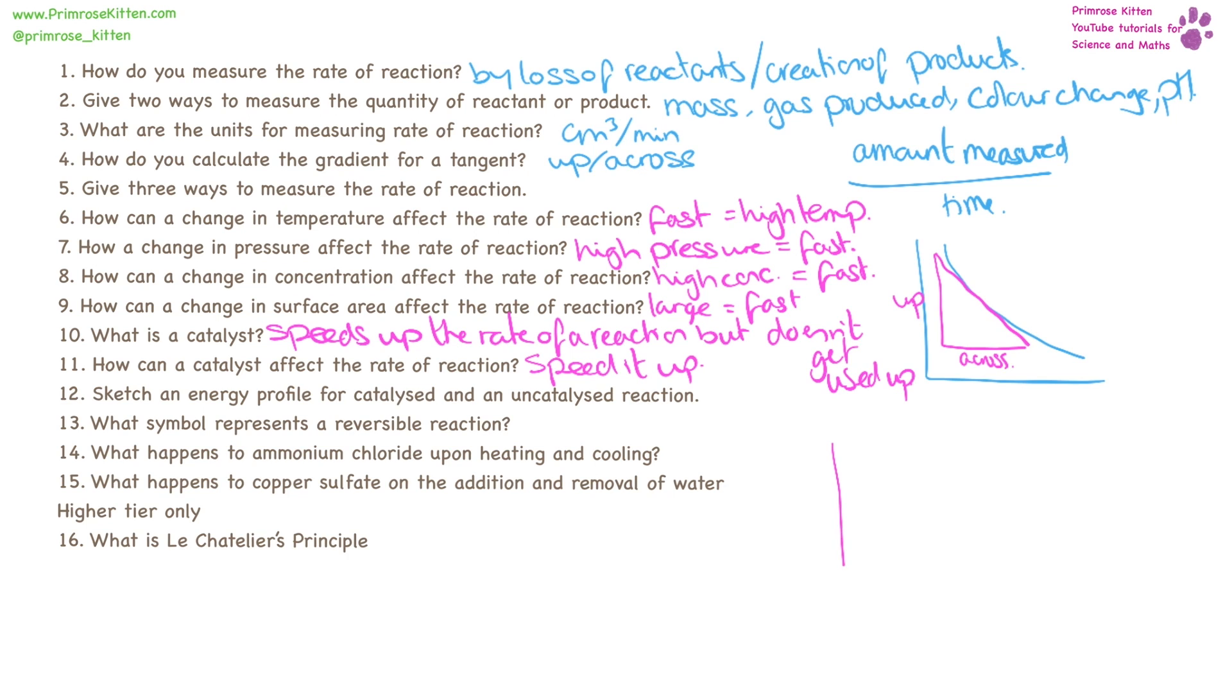Energy profile for a catalyzed versus an uncatalyzed reaction. If we have an uncatalyzed reaction, we're going to have our reactants. There is going to be a large activation energy to overcome. Whereas, with a catalyst, that activation energy is smaller. So, less energy is needed for the reaction to get started.